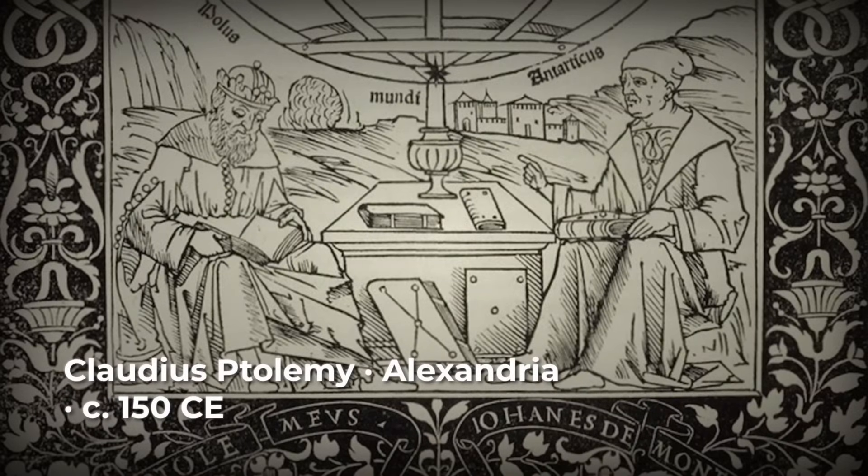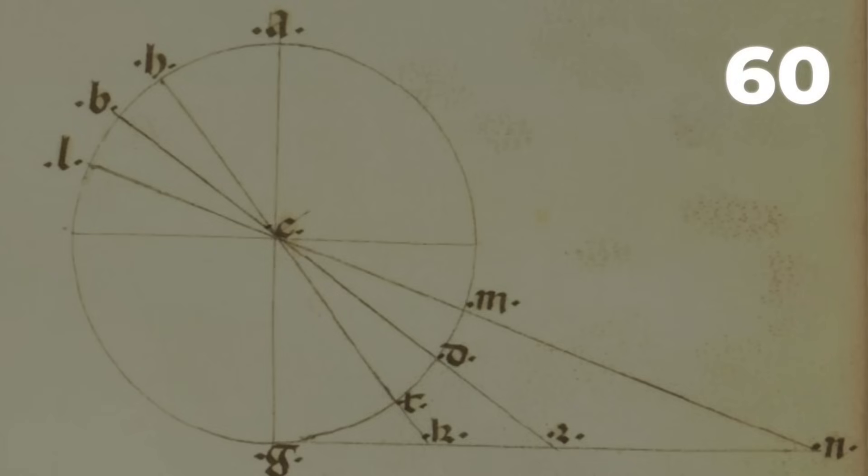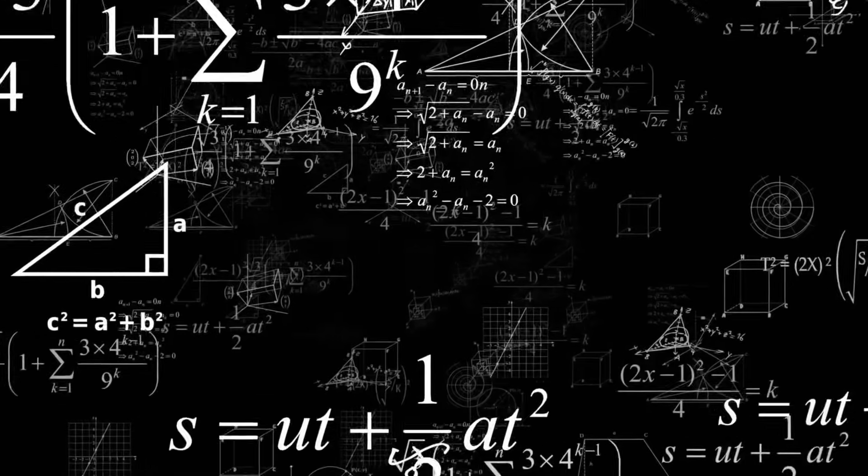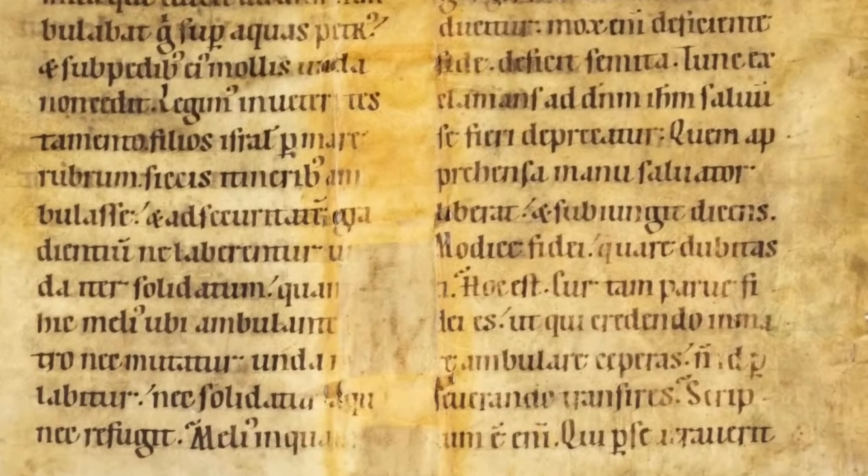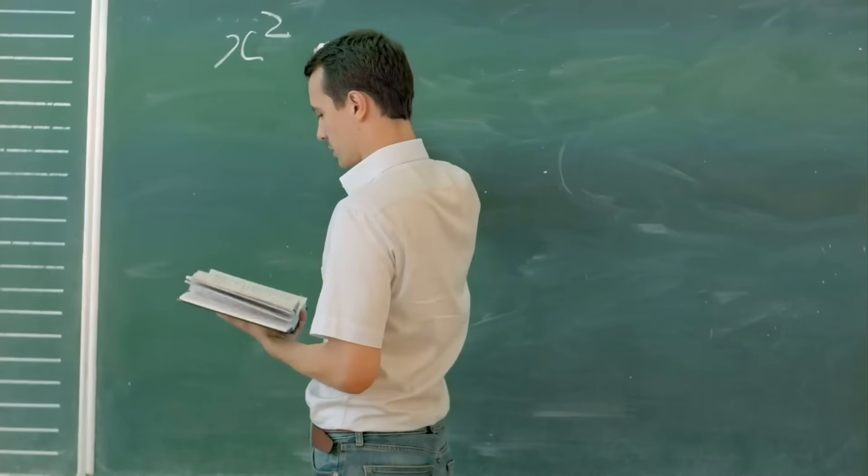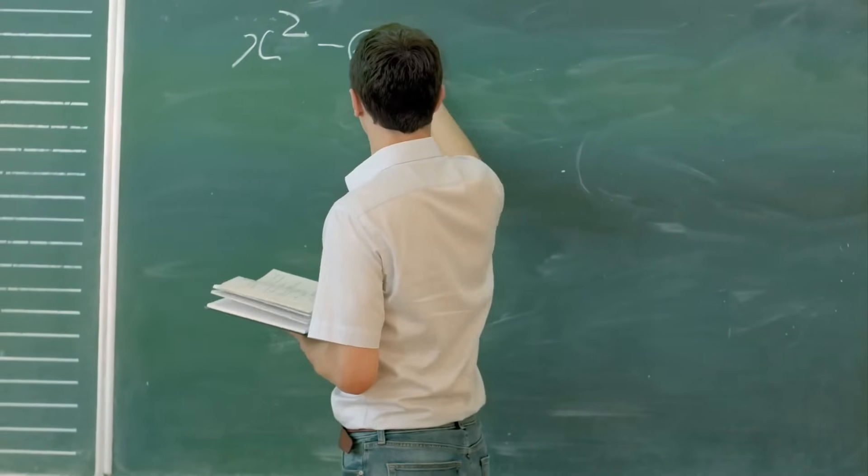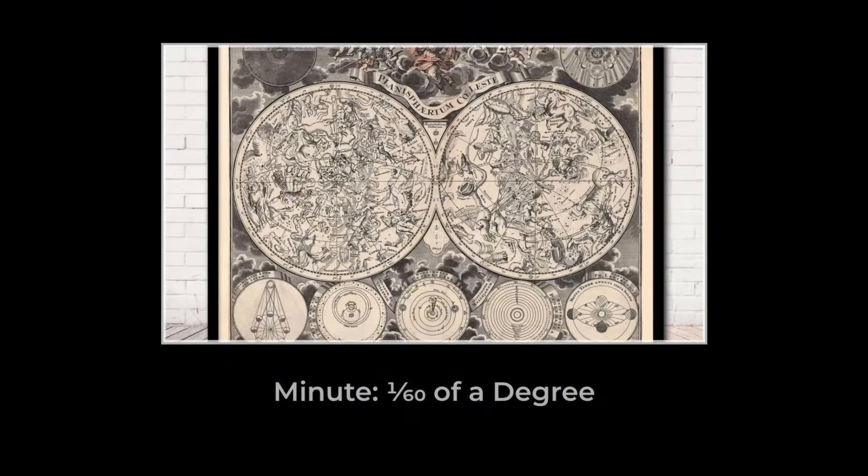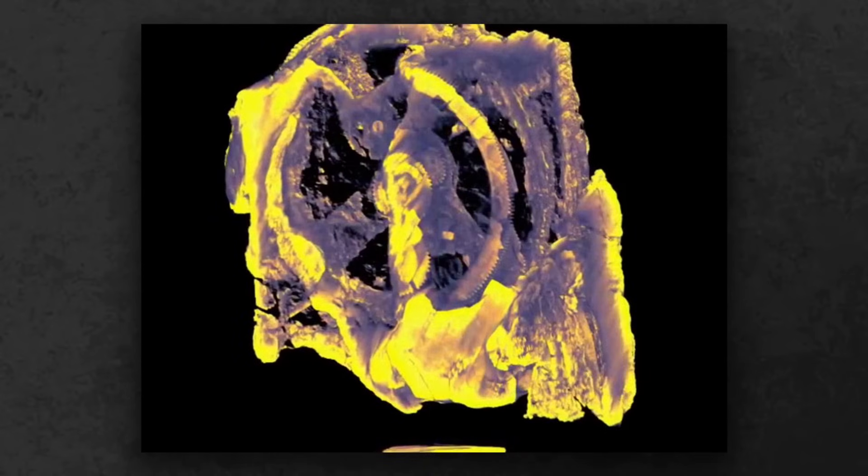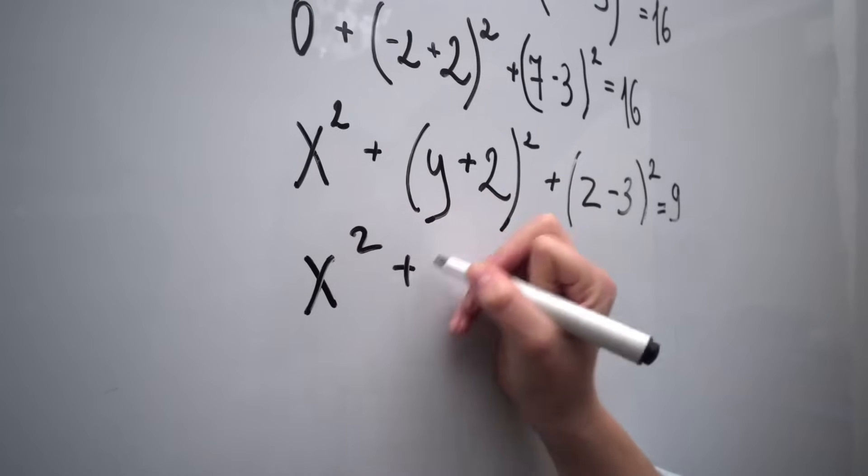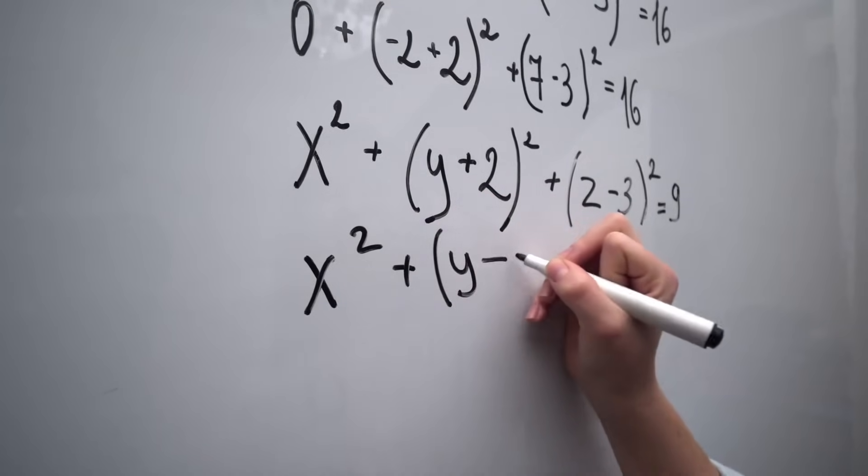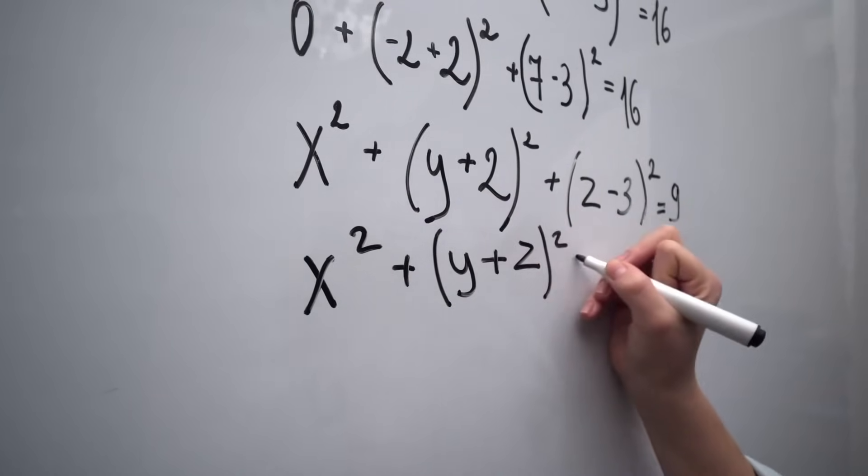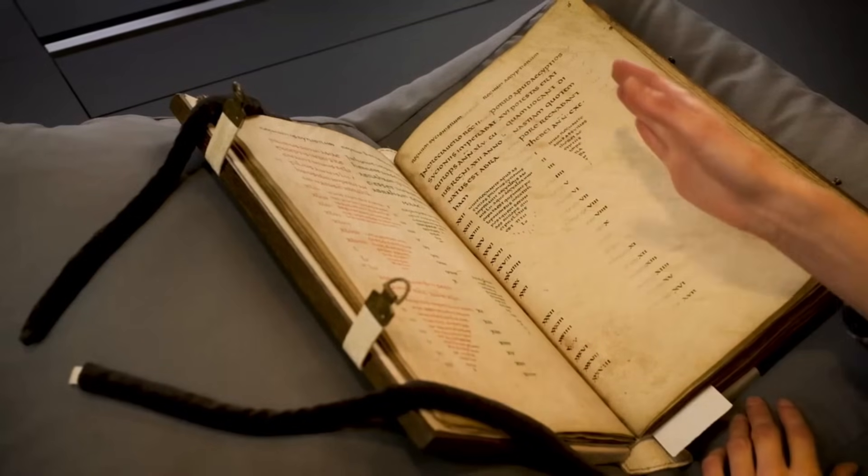Ptolemy, writing his Almagest in the 2nd century CE, took the next step. He broke each degree of the circle into 60 smaller pieces. These were not yet called minutes, as we know them, but pars minuta prima, the first small part. Each of these could be split again into 60 pars minuta secunda, the second small part. What began as a way to describe tiny slices of the sky soon became a toolkit for dividing time itself. In Ptolemy's tables, an angle might be written as 63 degrees, 14 minutes, and 30 seconds, though the words were still Latin and the numbers still sexagesimal.